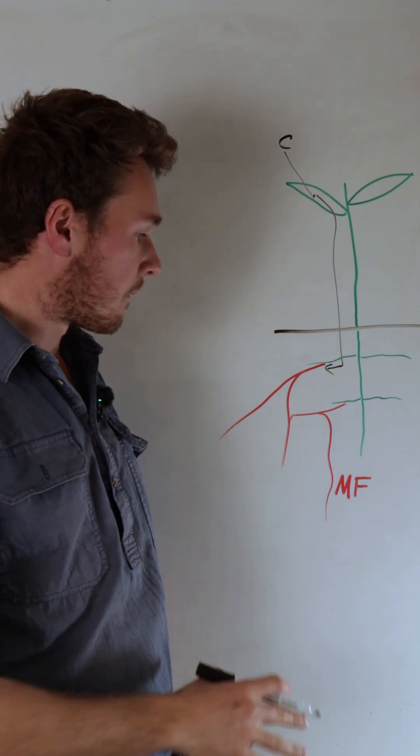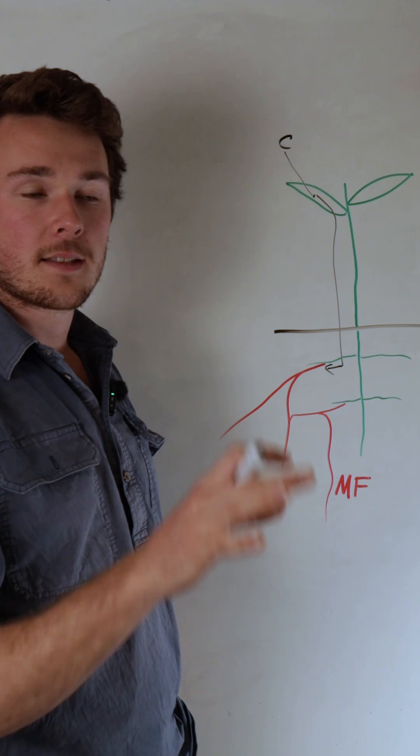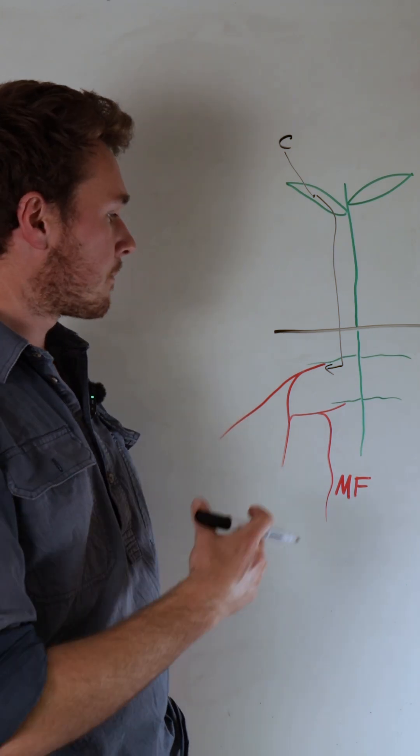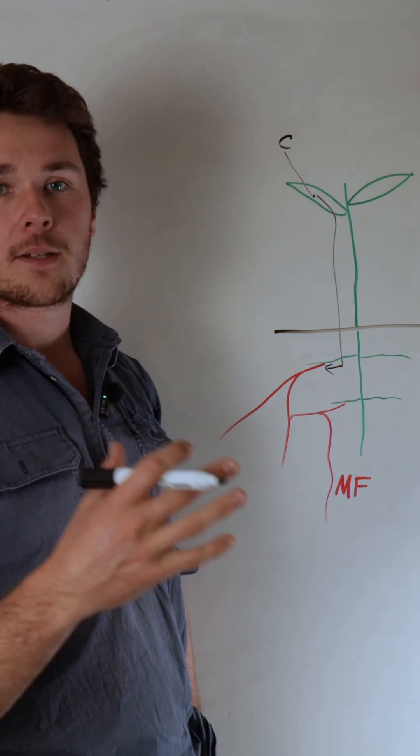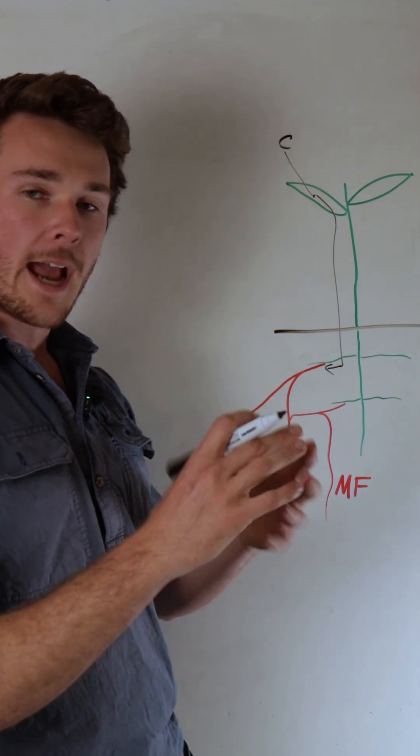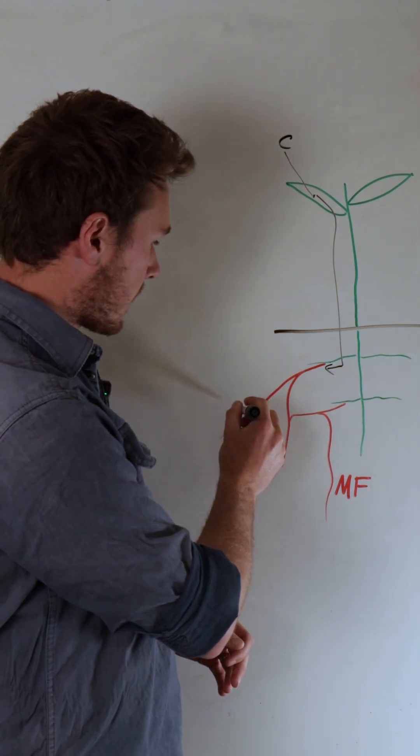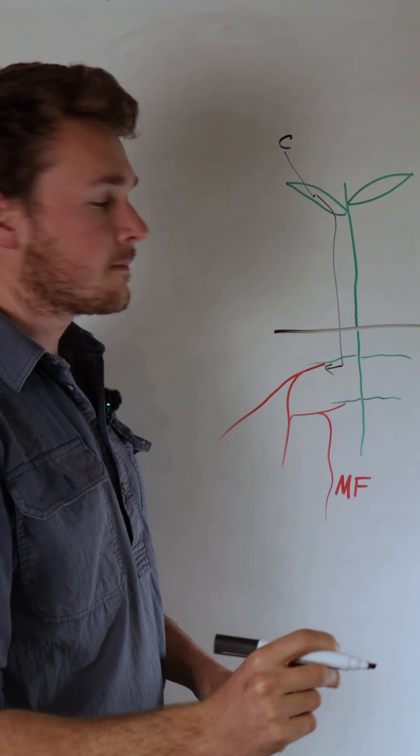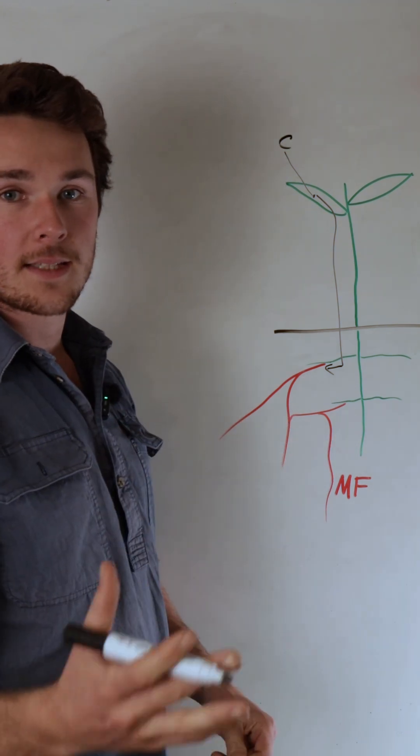One of which is a super important fungus called mycorrhizal fungi. This takes those sugars and produces what's called glomalin or different compounds inside aggregates. This final step is called humification, and this is where a lot of your soil organic matter is actually built.